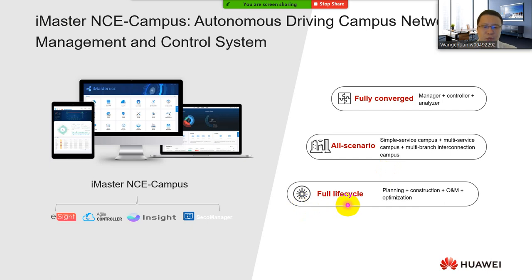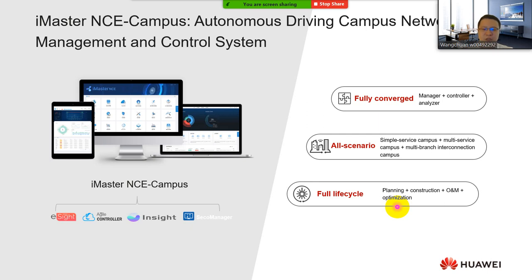The third key feature is full life cycle management. iMaster NCE Campus provides full life cycle support covering planning, construction, O&M, and optimization. You can pre-configure on NCE Campus before physically connecting devices. Once you plug in the network devices, NCE Campus automatically provisions all pre-configurations to devices within five minutes, even for very large campuses. You can monitor your network from both user and device perspectives, upgrade software images remotely, back up configurations automatically, replace faulty devices by plug-and-play, and optimize your network using AI and big data.